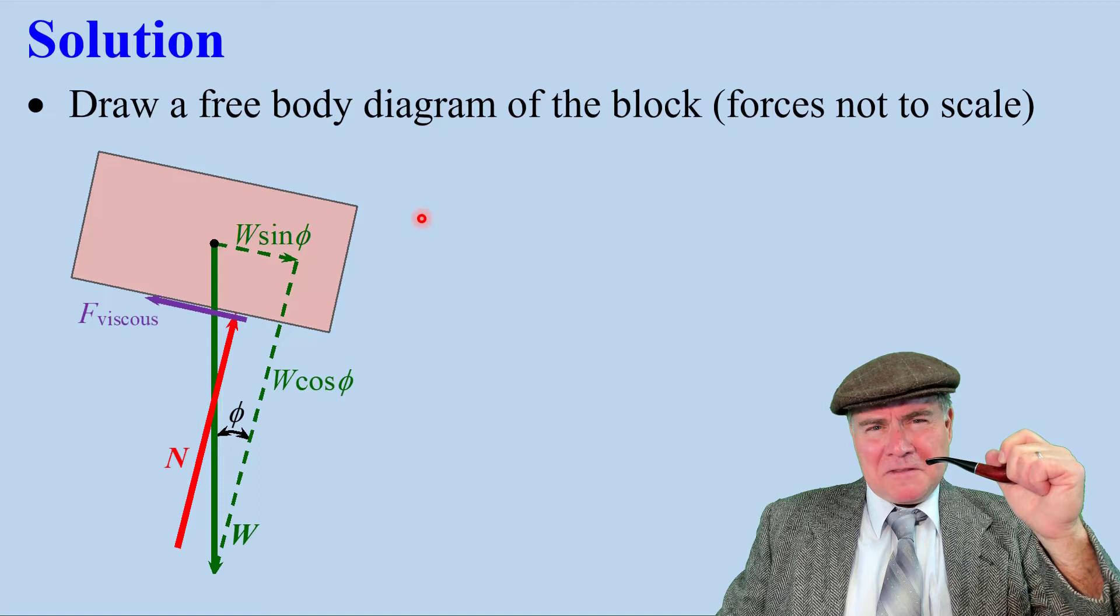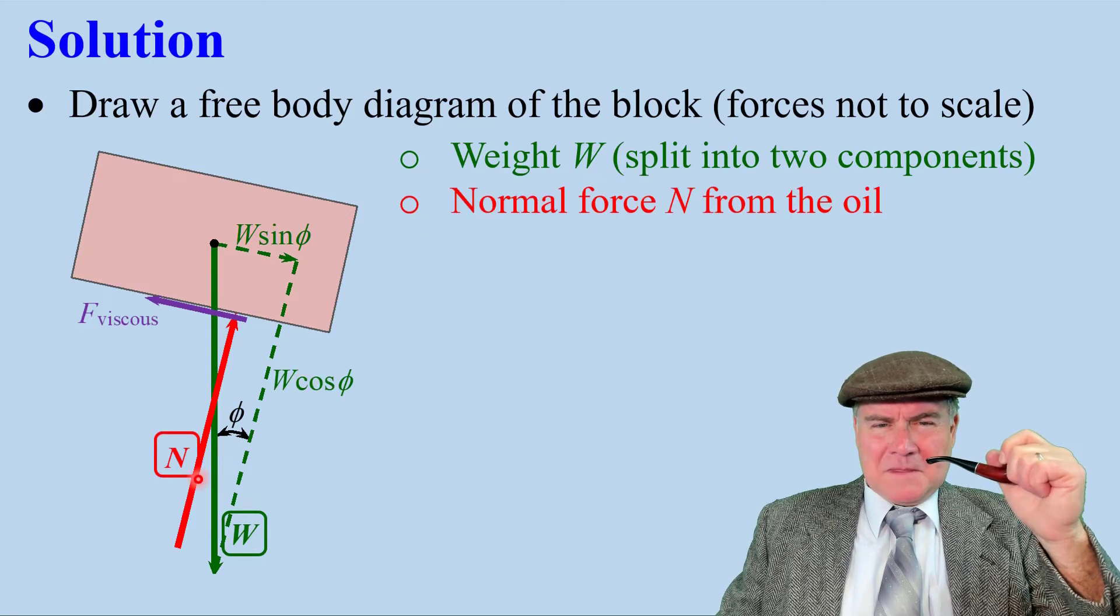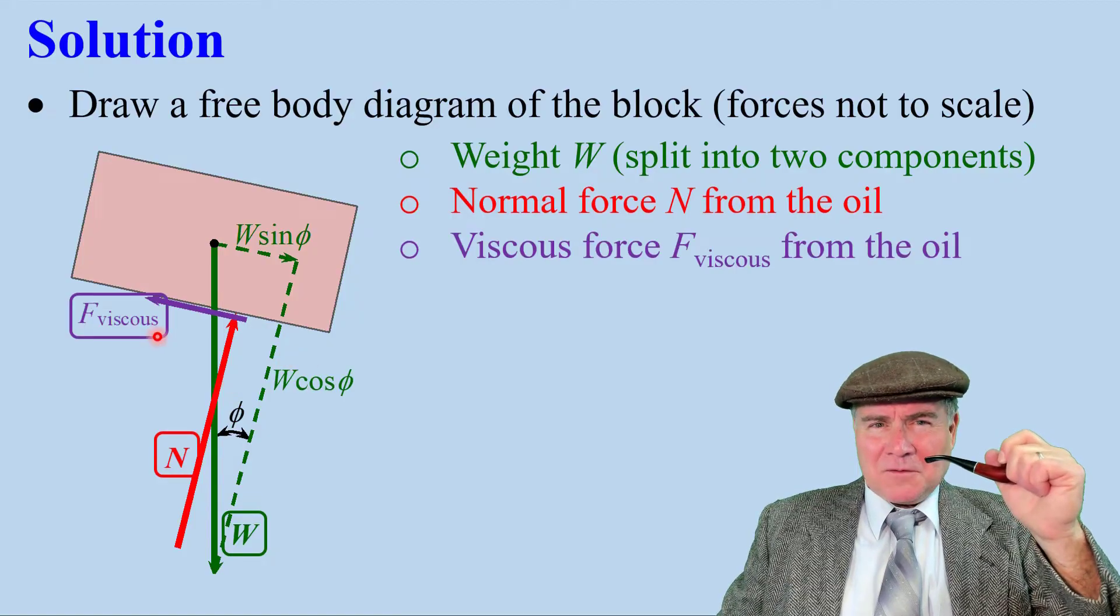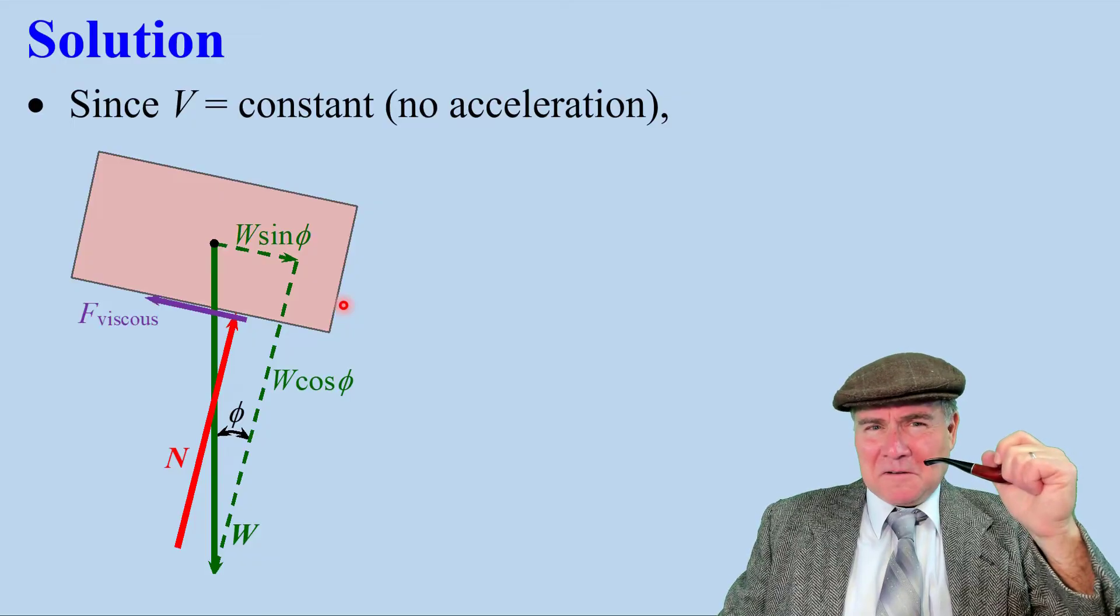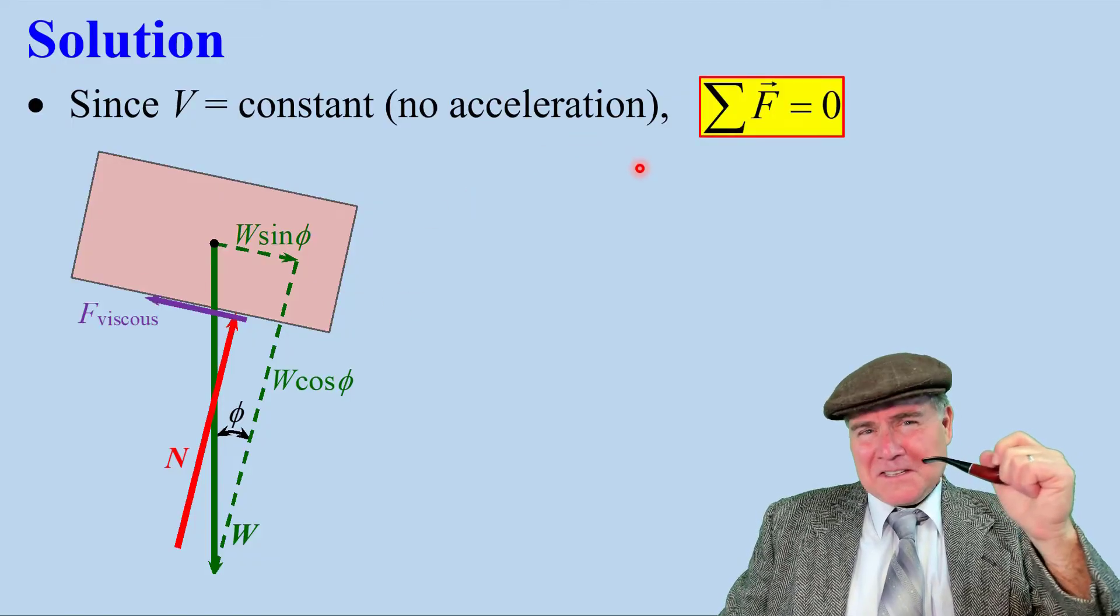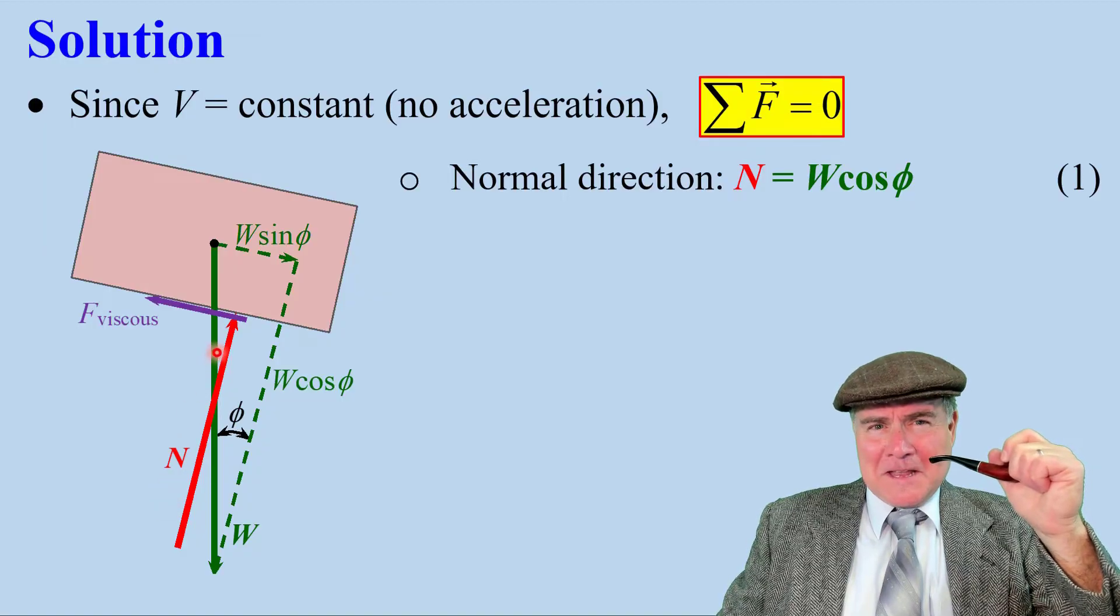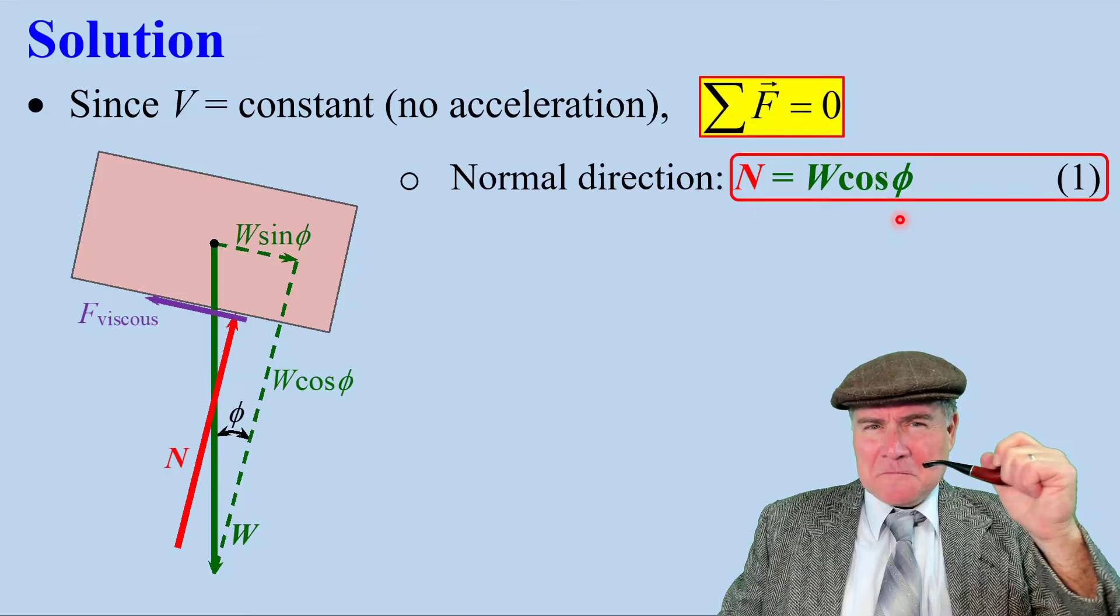To solve, we draw a free body diagram of the block. There's a weight W, which we split into two parts. There's a normal force N, the oil acting on the block, and there's a viscous force trying to slow down the block. Since V is constant, there's no acceleration. Newton's second law says that sigma F has to be zero. In the normal direction, this N must be balanced by W cosine phi. Let's call this equation 1. In the tangential direction, the viscous force must be balanced by W sine phi. We'll call that equation 2.